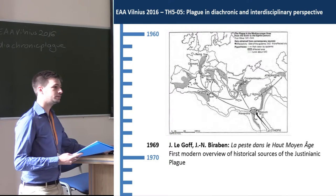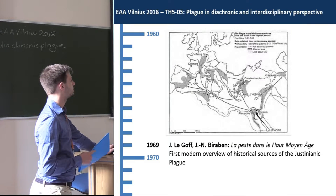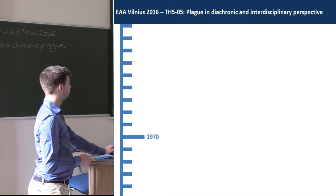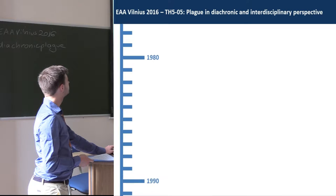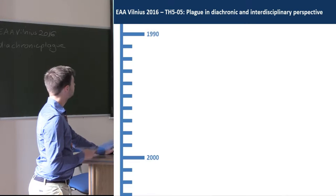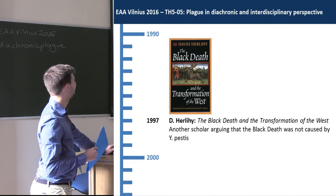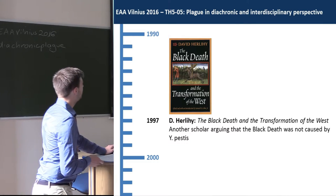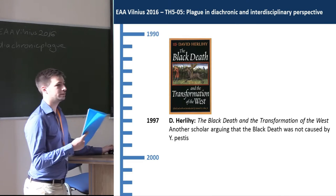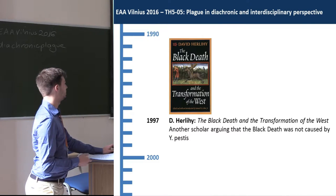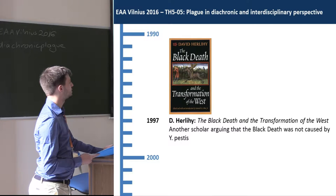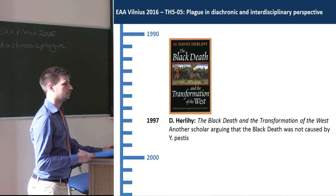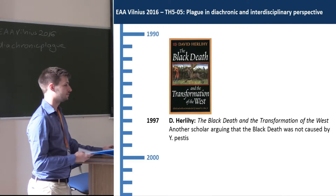In 1969, there was the first important publication about the Justinianic plague — what we call the first pandemic — by Le Goff and Birraben. Around the same period, Twig and later Hurley published books arguing that plague was not caused by Yersinia pestis, but probably by other infective agents like smallpox or something else.